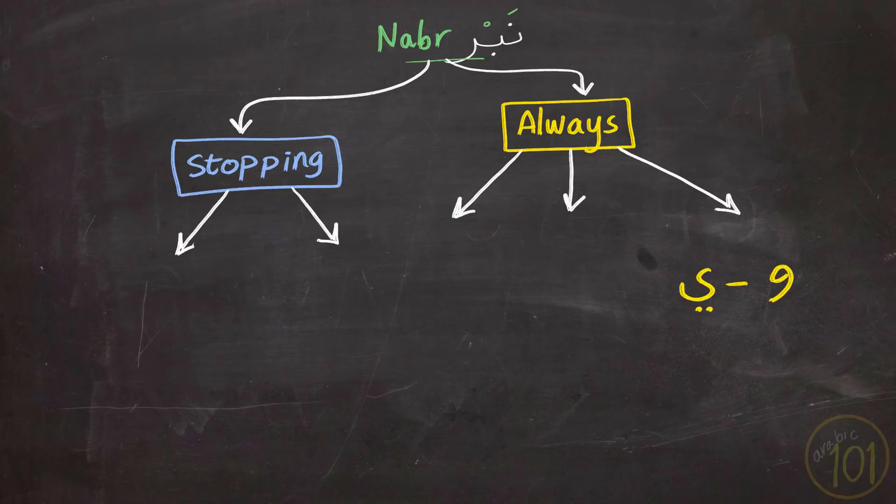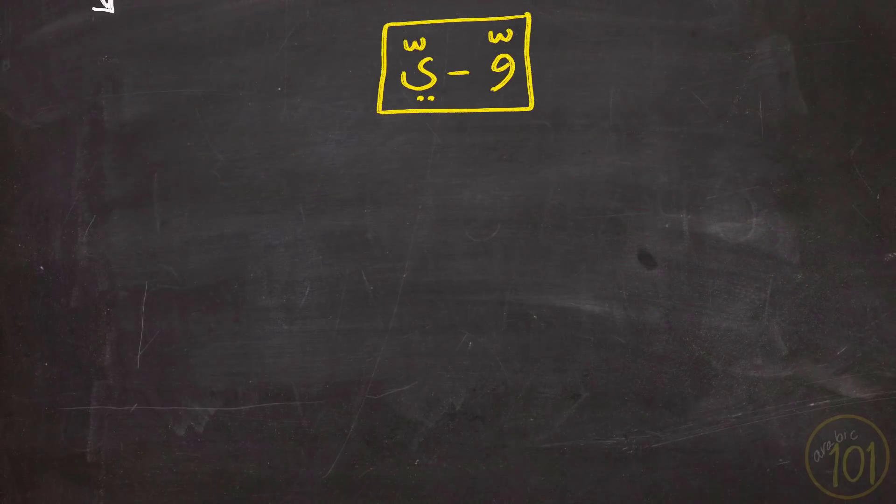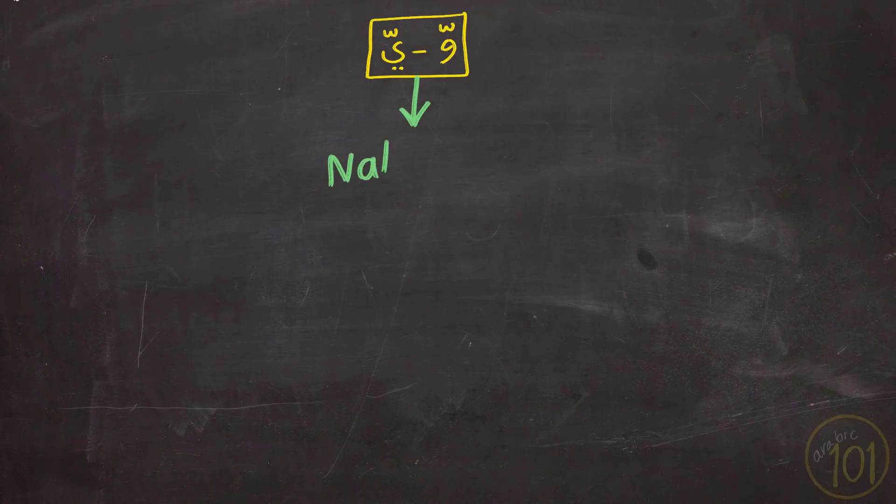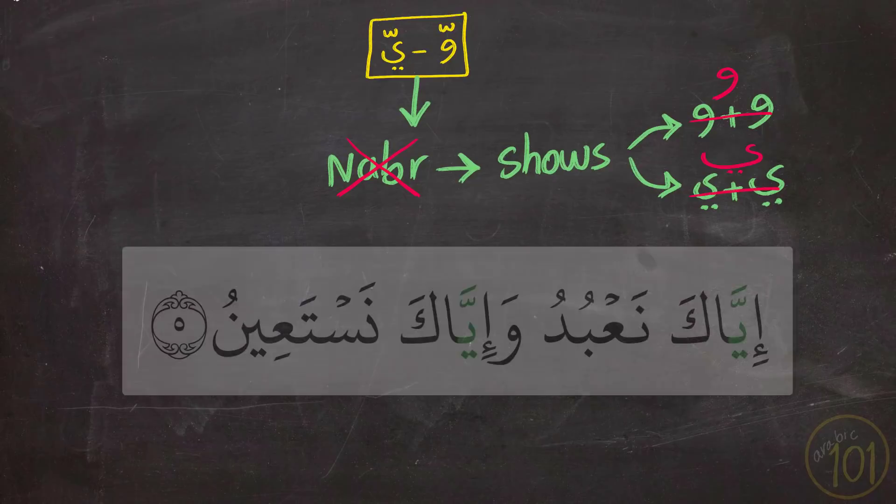The first case is when Wao or Ya have Shadda. When this happens, they will receive Nabr or stress to show that there are two times Wao or two times Ya. So why is this necessary? Since a Shadda should suffice, right? Well, failing to apply the proper Nabr on the Wao or Ya with the Shadda may result in extending the Wao or the Ya rather than show the duplicated letter. This is actually one of the very common mistakes in Surah Al-Fatihah.